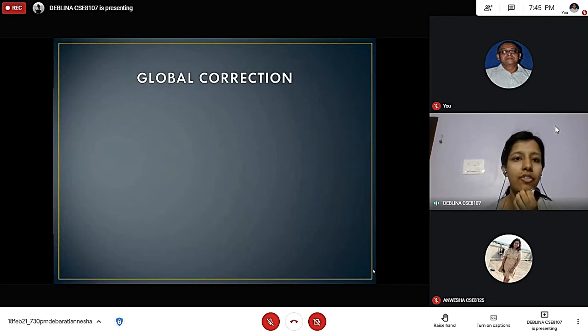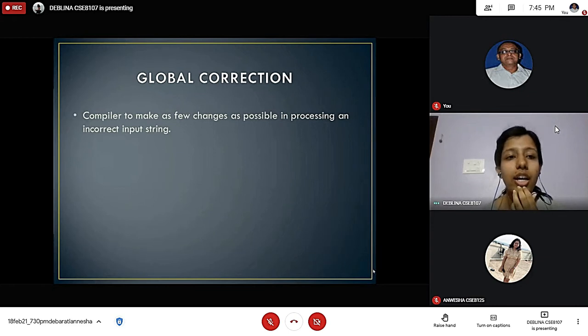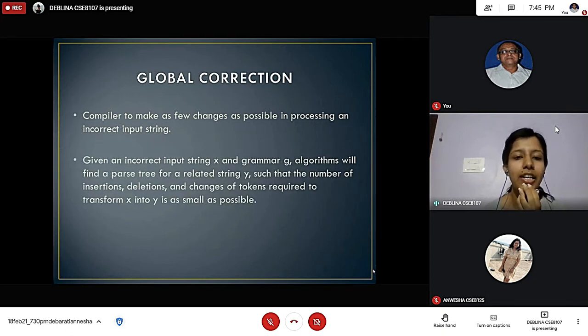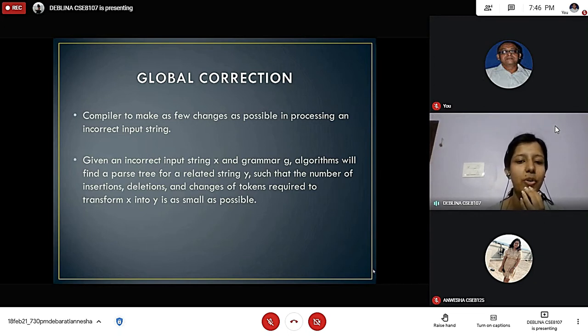Next, global correction. In global correction, the compiler has to make as few changes as possible in processing an incorrect input string. For example, given an incorrect input string x and grammar g, algorithms will find a parse tree for a related string y, such that the number of insertions, deletions, and changes of tokens required to transform x into y is as small as possible.